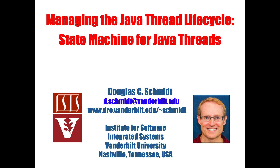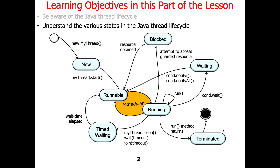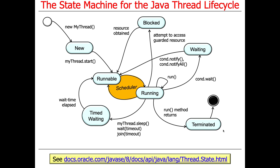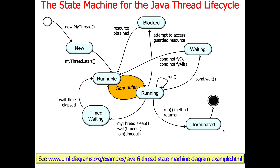The earlier discussion was a warm-up for what we're about to cover: the various states that exist and are transitioned to and from in the Java thread lifecycle. The Java thread lifecycle can be represented as a state machine. You can find out about the various states at the link shown, which lists all the states on this diagram. It's a lot easier to understand if you look at it visually.